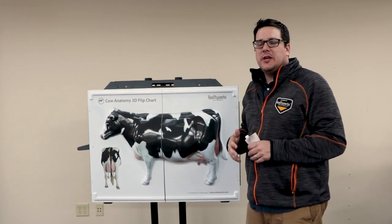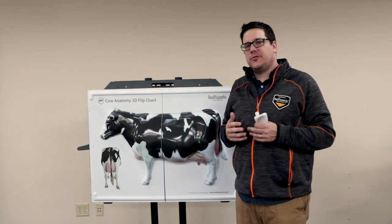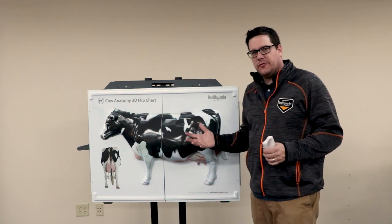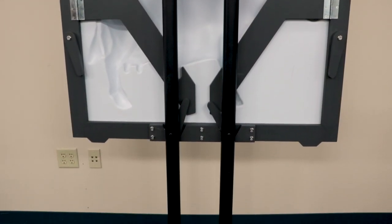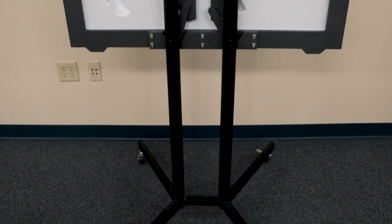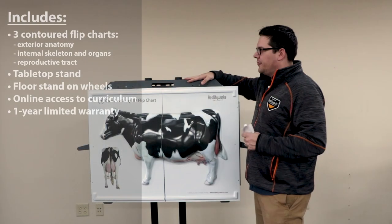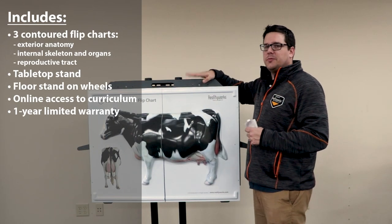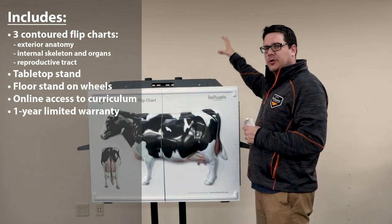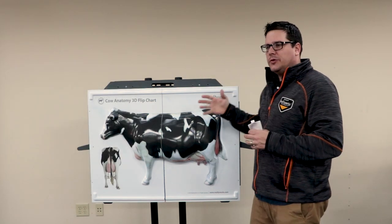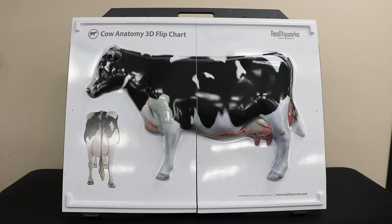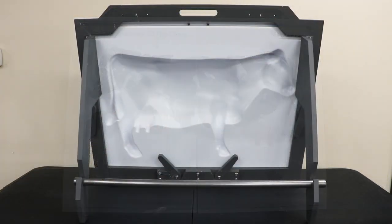RealityWorks is excited to introduce the Cowanademy 3D Flipchart. It has its own stand with lockable wheels so it is movable but also locks in place. The frame can also be mounted to a wall so you can have it up at all times, or it is available to put on a desktop with legs that flip out so you can use it in a classroom setting on a table as well.